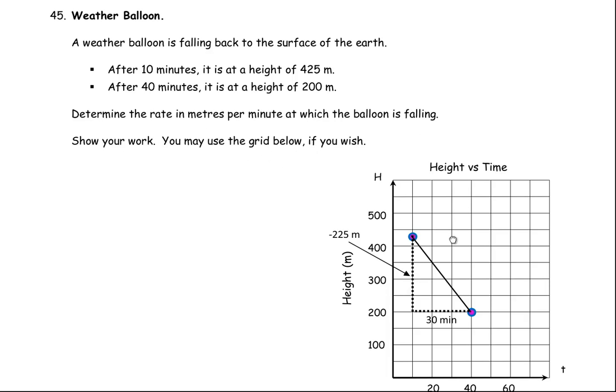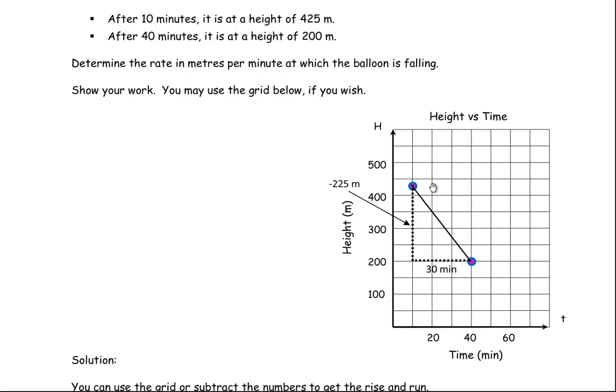I am going to start with the grid and show you how to do this with the grid and without the grid, although they are very similar. If you plot the information, 10 minutes is at a height of 425. Every block here is 50 meters: 50, 100, 150, 200. This would be 400, that would be 450. If I want to plot 425 I should be halfway between 400 and 450. So that is where that dot comes in, above the 10 minutes.